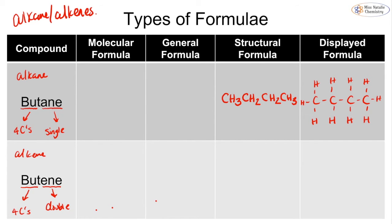For the molecular formula, we simply count: four carbons gives C4, and counting ten hydrogens gives H10, so the molecular formula is C4H10. For the general formula of an alkane, we swap the number of carbons for n, giving CnH(2n+2). We can verify this: four carbons multiplied by two gives eight, plus two gives ten — matching our H10.